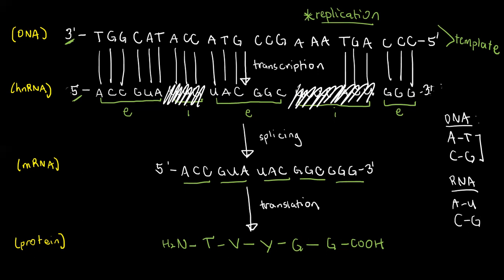ACC, GUA, UAC, GGC, GGG. I already did that before recording this. ACC actually stands for threonine, GUA for valine, UAC for tyrosine. Both of these are degenerate, they are both glycine.